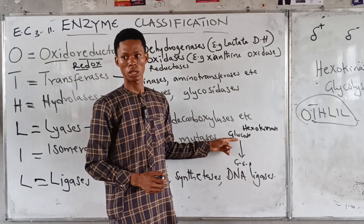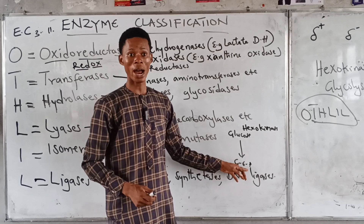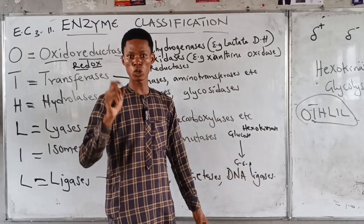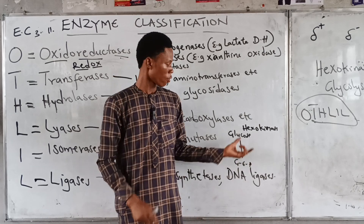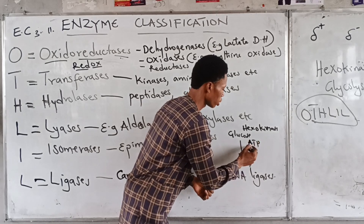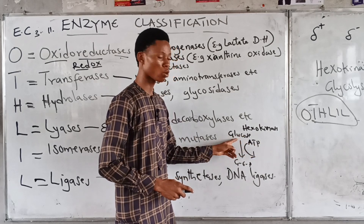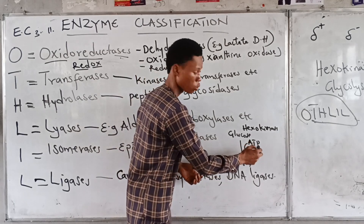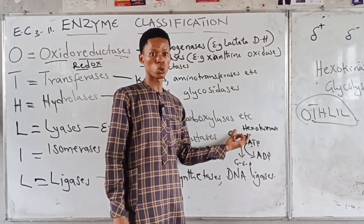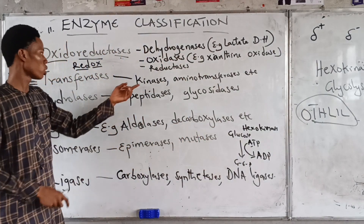Hexokinase catalyzes the reaction: glucose → glucose-6-phosphate. Glucose has no phosphate, but glucose-6-phosphate has one phosphate at position 6. The phosphate comes from ATP (adenosine triphosphate). So hexokinase transfers one phosphate group from ATP to glucose to form glucose-6-phosphate, leaving adenosine diphosphate (ADP). Any enzyme ending in 'kinase' is transferring a phosphate group, so it falls under transferases.